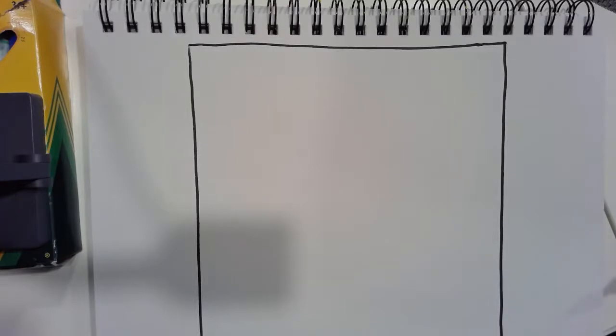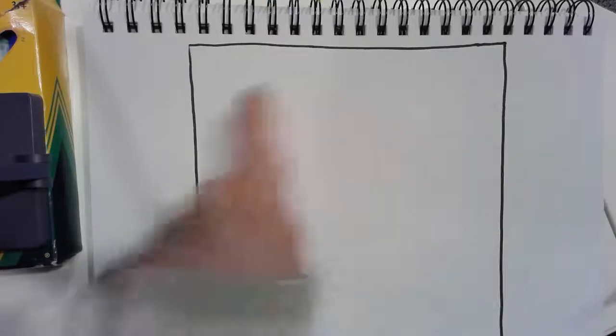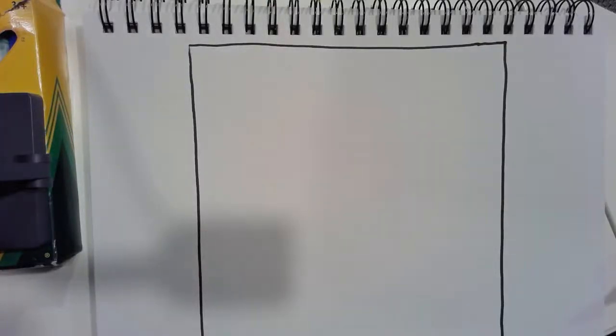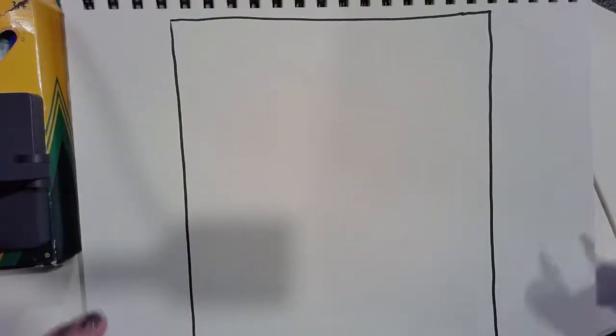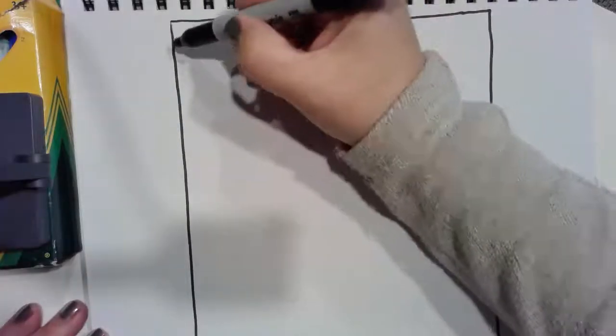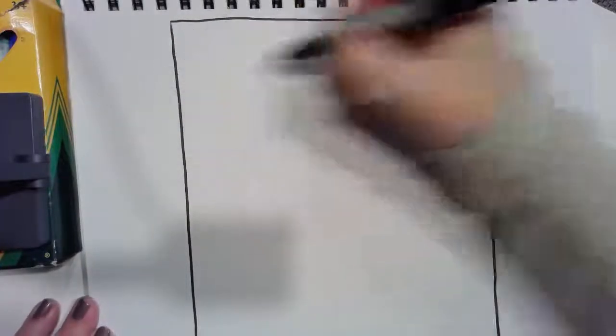Now, do you remember how many groups of 10 makes 100? 10 groups of 10. So we're going to have 1 group of 10, 2 groups of 10, 3 groups of 10, all the way down until we get to 100. Right down here, just like our 100s chart in school.